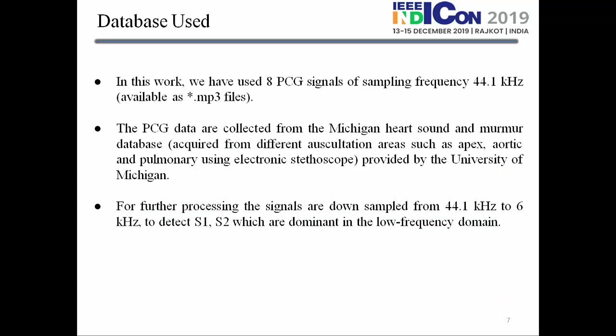We used an open source database consisting of 8 total PCG signals collected from different auscultation areas: the aortic area, pulmonic area, and apex area. For further processing, we downsampled the signals from the original sampling frequency to 6000 Hz.